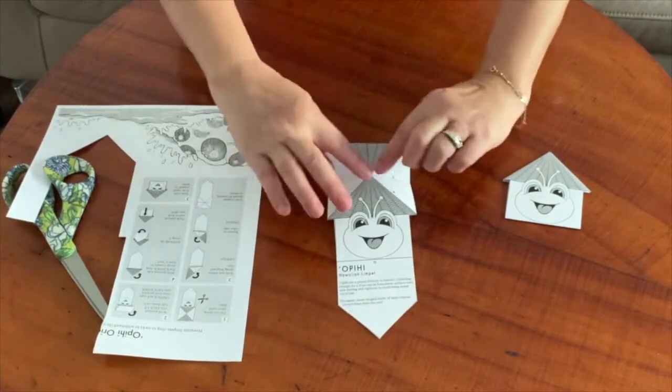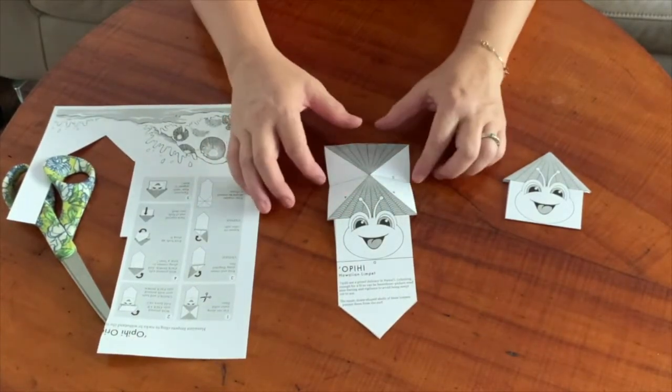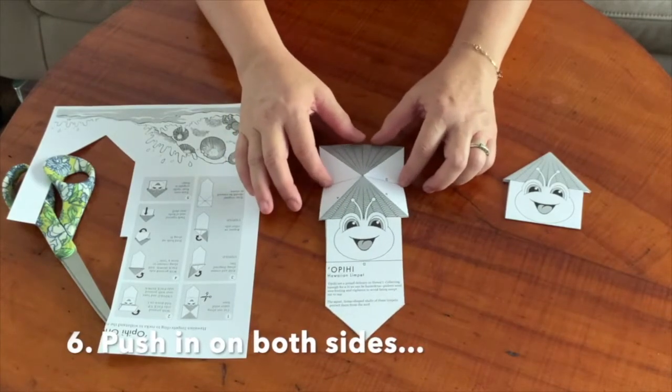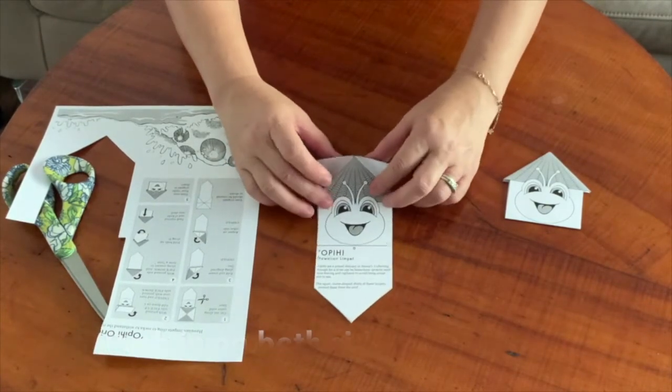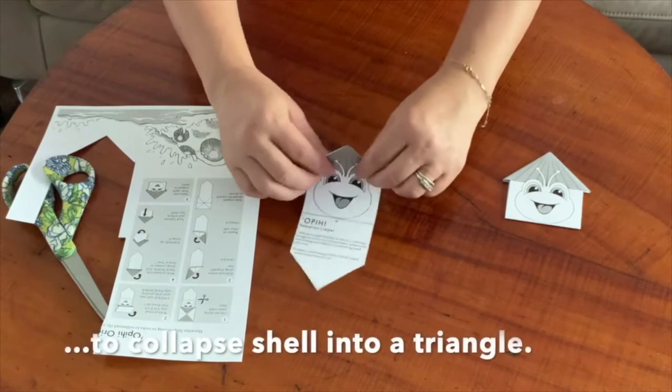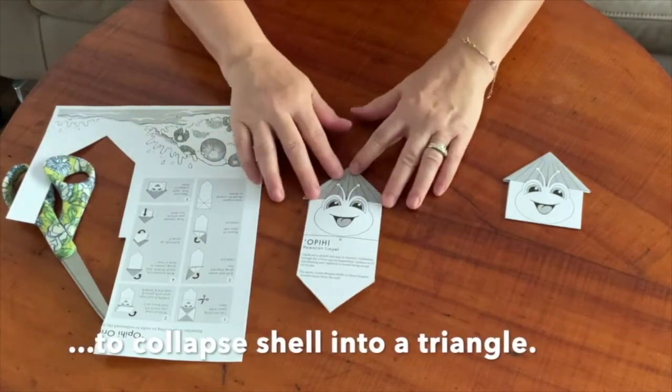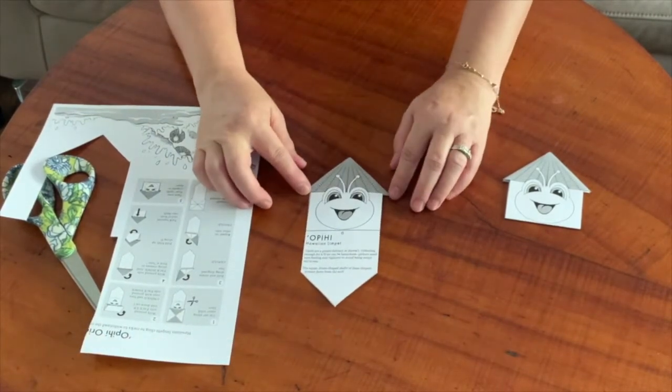Now you're going to see how it kind of stands up on its own. You're going to push in on this horizontal line C and you're going to collapse it along the diagonal folds. And now we've already created the opihi shell.